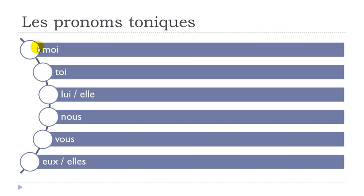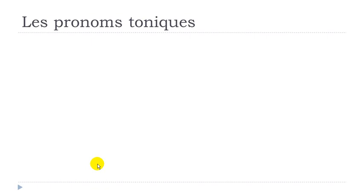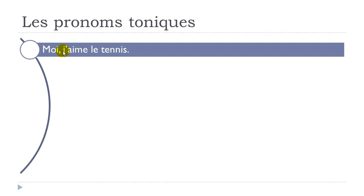Let's see them one more time: MOI, TOI, LUI, ELLE, NOUS, VOUS, EUX, ELLES. I did prepare a few examples. The first one: MOI, J'AIME LE TENNIS. Here you can see that you start the sentence with MOI (me), and then you have to put the pronom personnel JE — you take the E away because the verb starts with a vowel — J'AIME means 'I like' or 'I love.' MOI, J'AIME LE TENNIS. Basically if you start with MOI, you want to insist on the fact that you really like or love tennis.